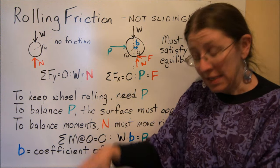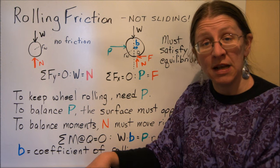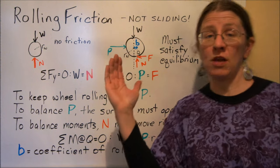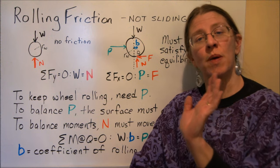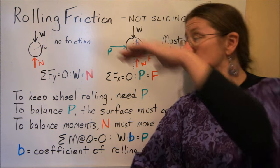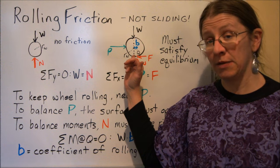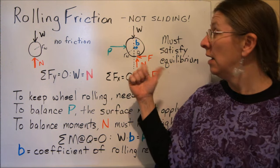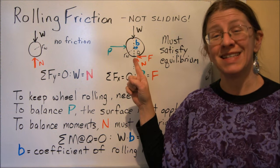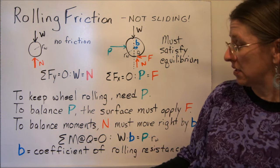This is the same as when we had a crate sitting on a surface like this. And the moment that is caused by P has to be balanced by the normal force. So we're going to actually slide this normal force that way by some distance. We're going to call that distance B. That's the coefficient of rolling resistance.